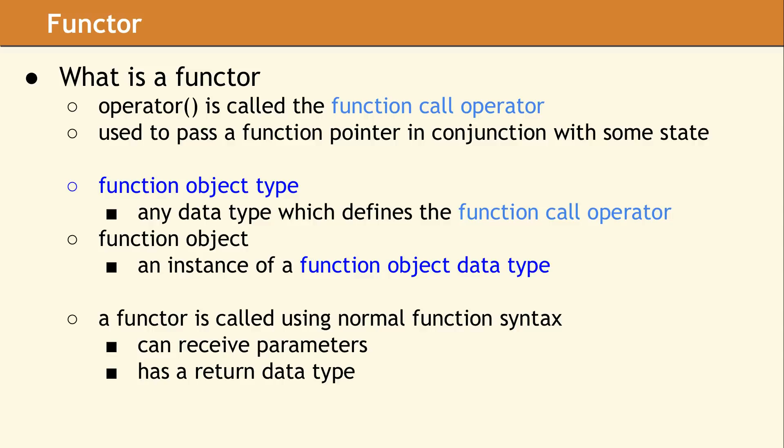A functor is similar to a function pointer, however, it provides more functionality. The C++ language has a great feature which allows operator overloading by defining a method whose name starts with the word operator. Operator open paren close paren is often referred to verbally as operator parens or the function call operator. Any class which defines the function call operator is called a function object type. An instance of a function object type is called a function object, and it can be called as if it were a regular function. A function call operator can receive parameters and return values just like a normal function can. But since it's actually a method which belongs to a class, it can also access members just like any method can access data in the class they belong to.